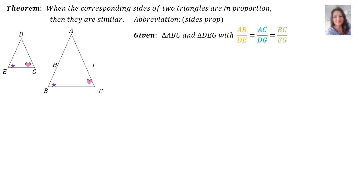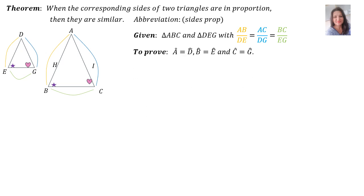Given is the big triangle ABC and the small triangle DEG, with the ratio AB over DE equals the ratio AC over DG equals BC over EG. Required to prove is that angle A equals angle D, angle B equals angle E, and angle C equals angle G.